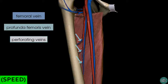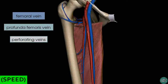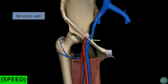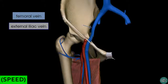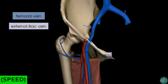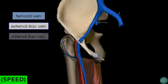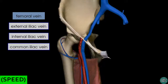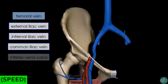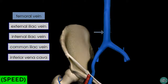Following the femoral vein even further proximally, it passes underneath the inguinal ligament, after which it becomes known as the external iliac vein. The external iliac vein then joins the internal iliac vein to form the common iliac vein. The left and right common iliac veins then unite to form the inferior vena cava.